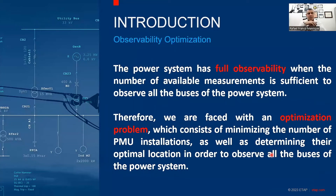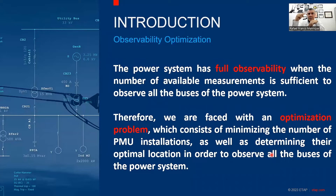For this work, it is important to understand when a power system reaches full observability. The optimization problem aims to minimize the number of PMU installations while determining optimal locations in the power system. In other words, the main focus is the observability and optimization of the number of measurement devices.